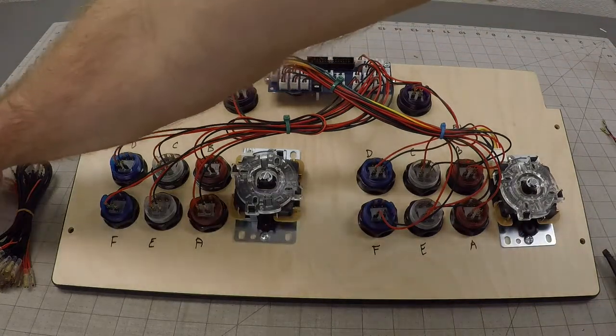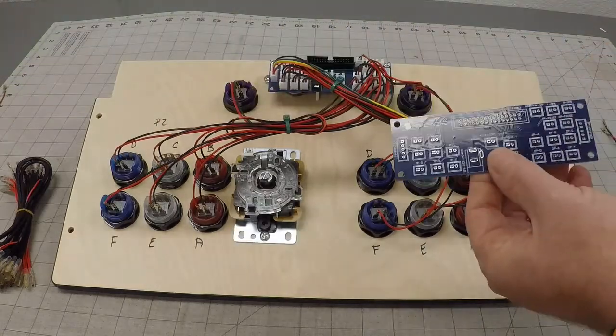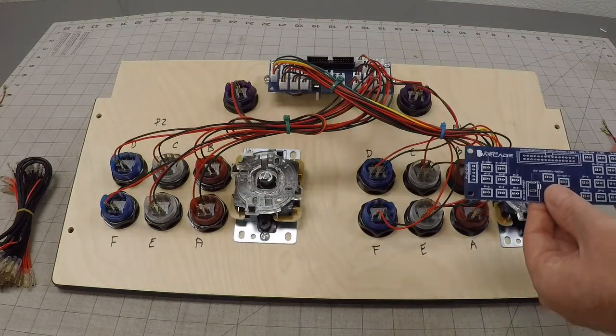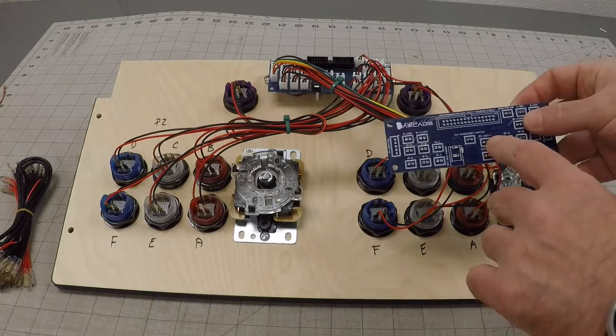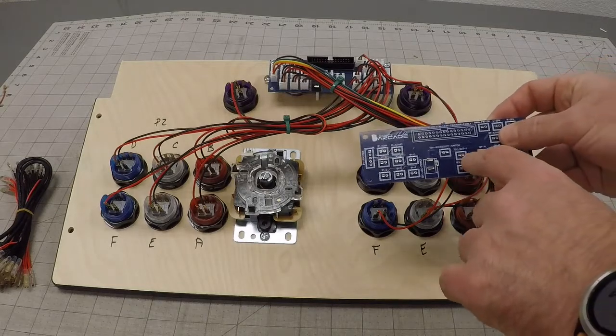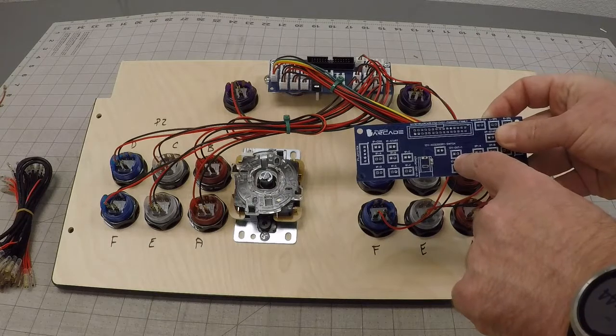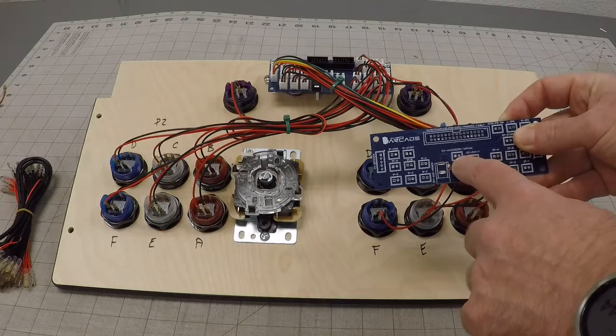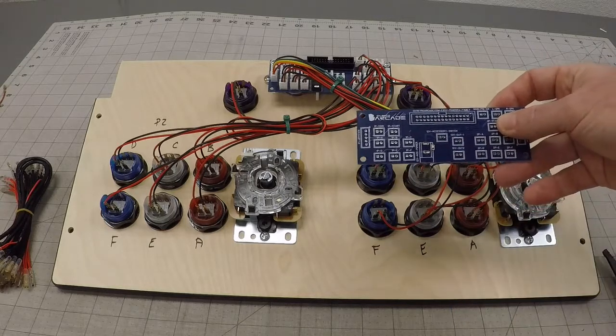I'm going to show you on this unpopulated board so it's a little bit easier to see. To hook this up you'll basically hook your LED harness into the 12 volt out and then you'll need to hook a power switch into the 12 volt accessory switch. That's the only two that you need to hook up.